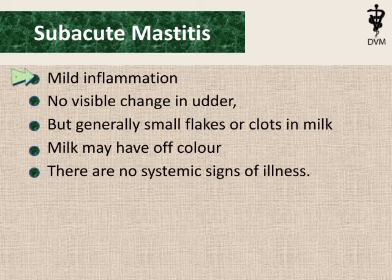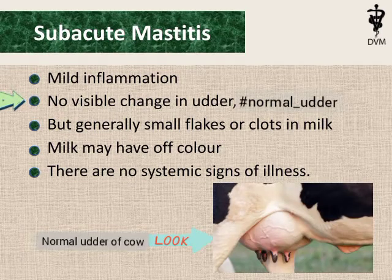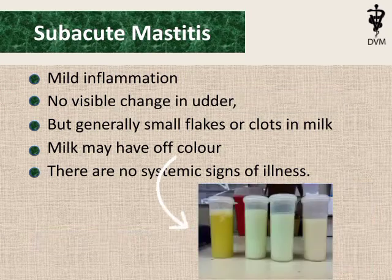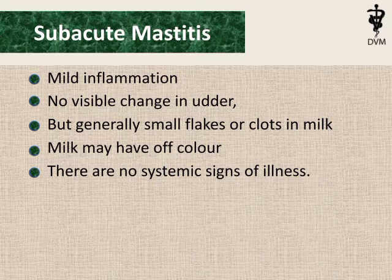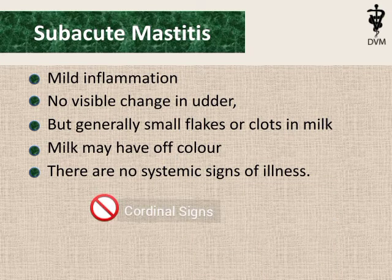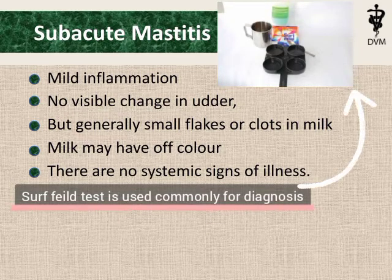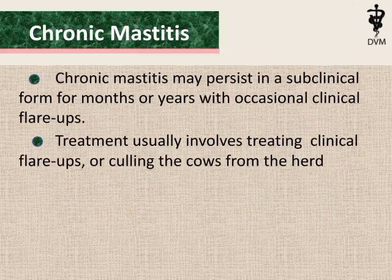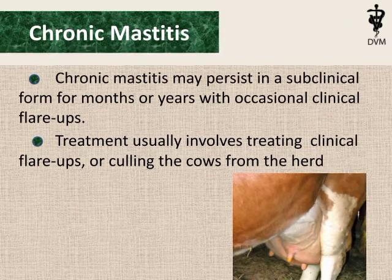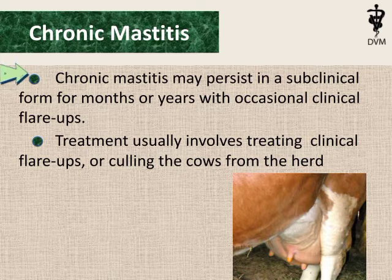Subacute mastitis includes mild inflammation with no visible change in the udder, but generally small flakes or clots in milk. Milk may have a change in color, and there are no systemic signs of illness in infected animals, making it difficult to diagnose. That is why the Surf Field Test is used.